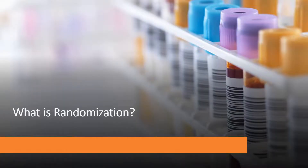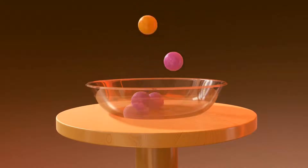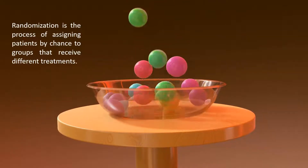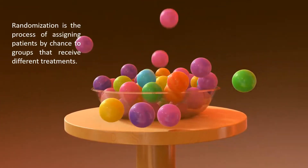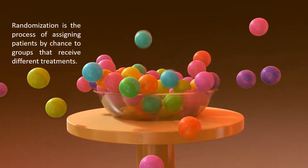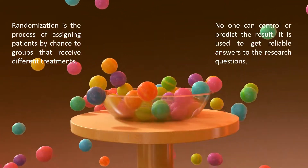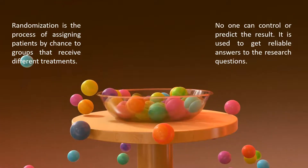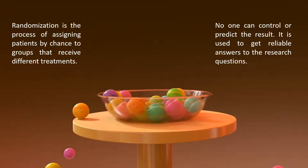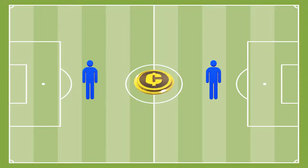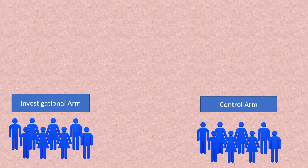What is randomization? Randomization is the process of assigning patients by chance to groups that receive different treatments. No one can control or predict the result. It is used to get reliable answers to research questions. It's like flipping a coin to decide who gets to go first in a game.